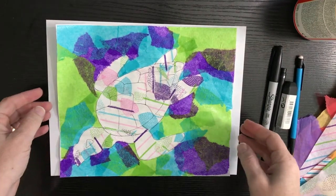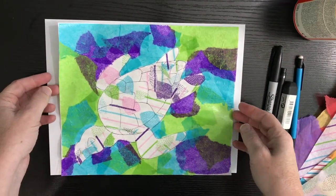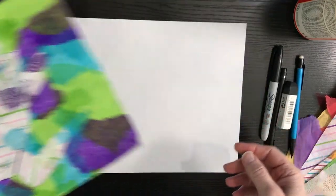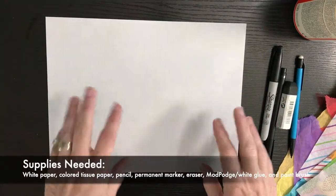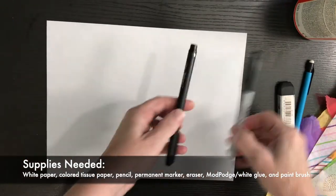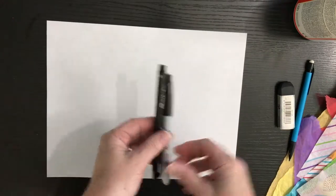For this lesson we're going to make a tissue paper turtle collage. We're going to start out with the supplies: a white piece of paper, sharpies, a large and a small one.